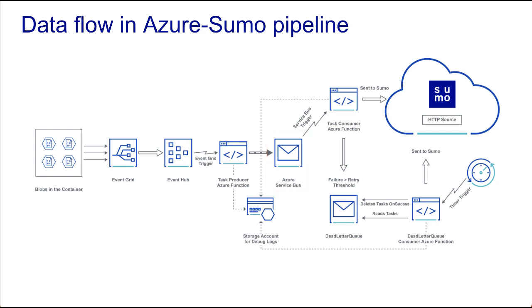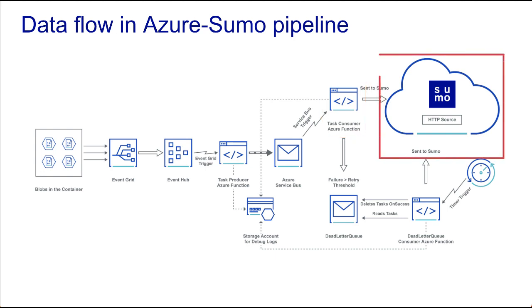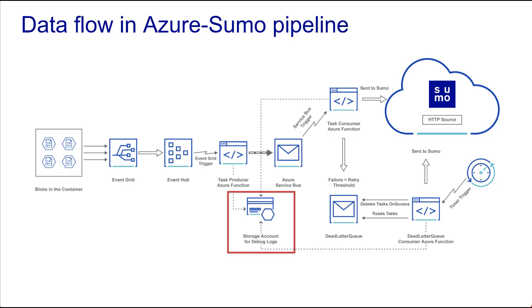Another Azure function named Task Consumer is triggered in response to a new task in the Azure Service Bus Queue. This function reads the data in the given range — that is, from the start byte to the end byte — then transforms the data and sends it to an HTTP source on a hosted collector in Sumo Logic. Each of the three Azure functions sends their logs to storage accounts created by an Azure Resource Management, or ARM, template.